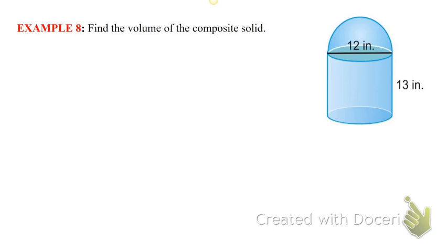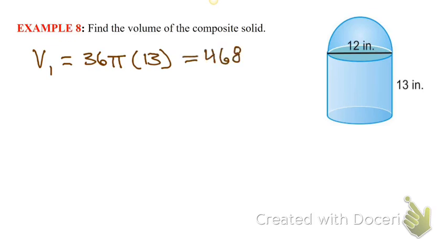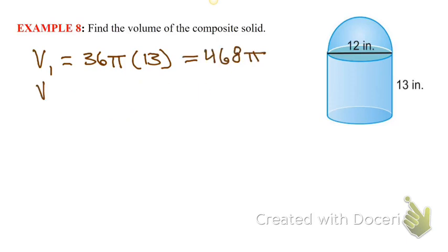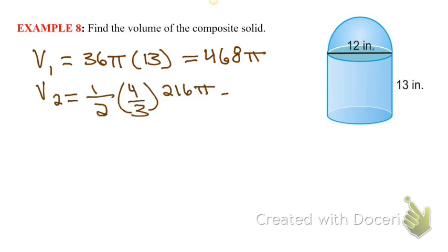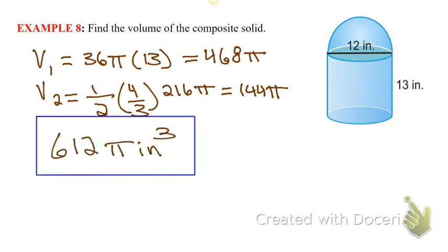Find the volume of this composite solid. The diameter is 12, so the radius is 6. You've got a hemisphere, so find the volume of the hemisphere — half the sphere. Then find the volume of the cylinder: 6 squared is 36 pi times the height 13 gives 468 pi. The hemisphere is one-half times four-thirds times 6 cubed, which is 216 pi. Then just add those together, and there you go.